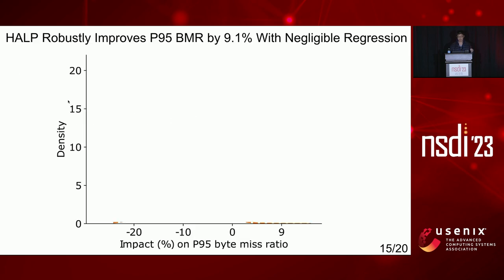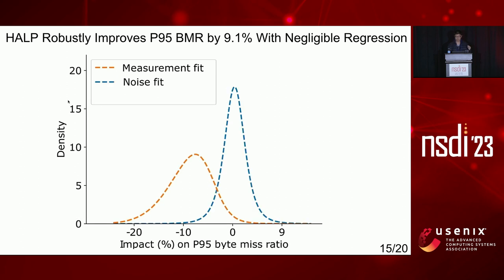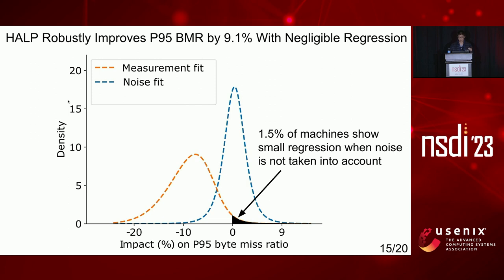We evaluate byte miss ratio impact using our impact distribution analysis. The graph shows the impact distribution — lower values are better. The orange line is the direct measurement distribution without impact distribution analysis. The blue line is the noise distribution from production, which can be up to 10% in P95 byte miss ratio difference. When noise is not taken into account, as shown by the orange line, there is 1.5% of racks impacted negatively, with some machines showing up to 4% byte miss ratio increase. Without denoising, we cannot tell whether the negative impact is due to the algorithm or production noise.